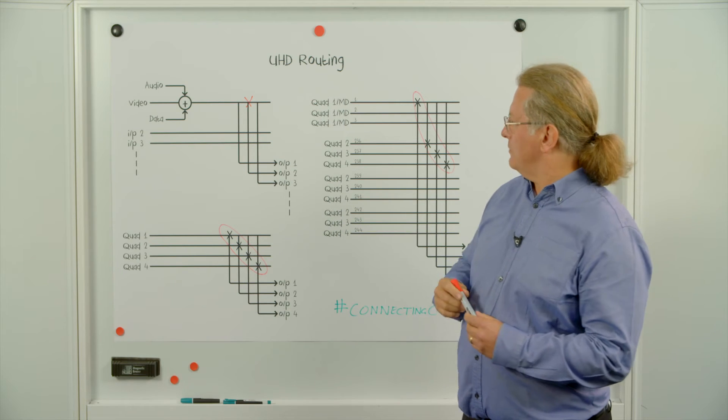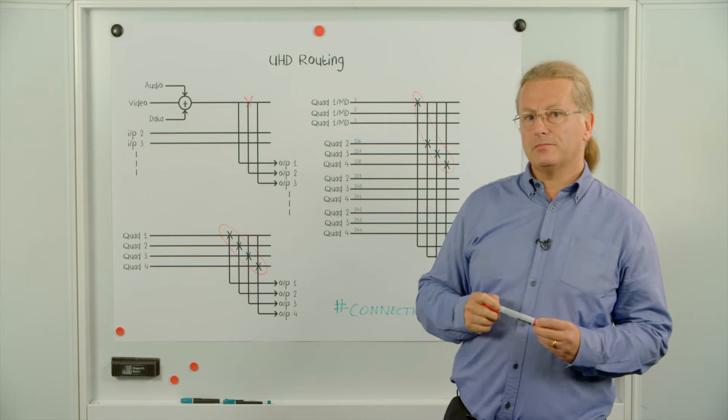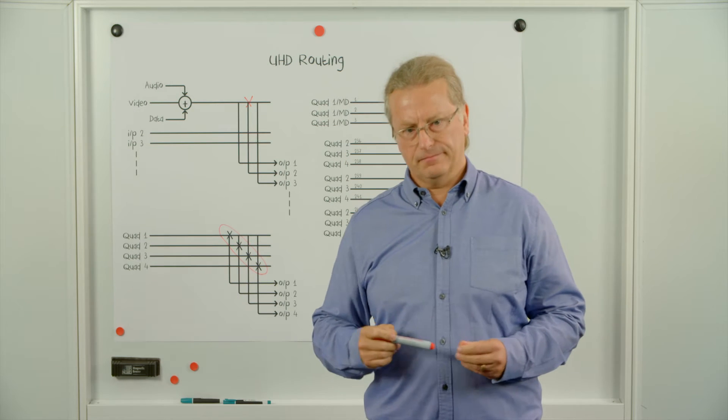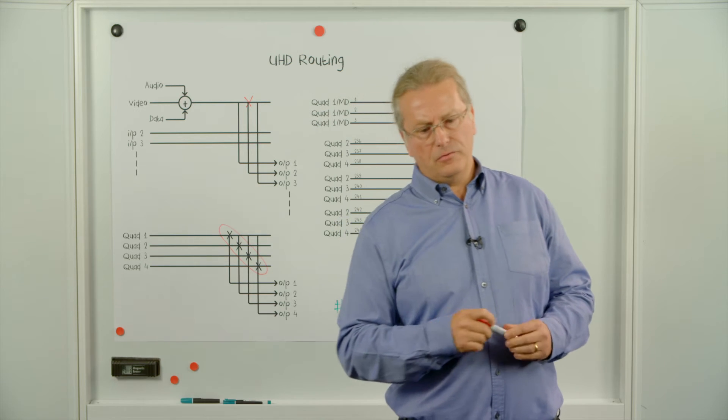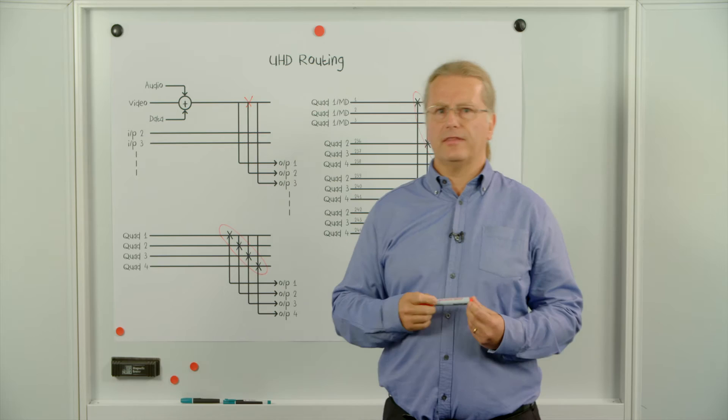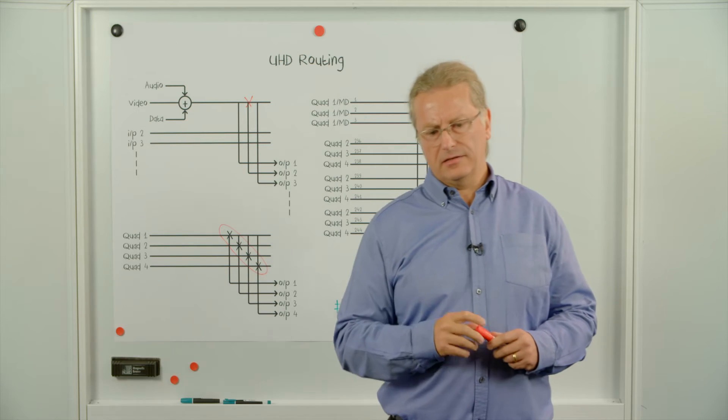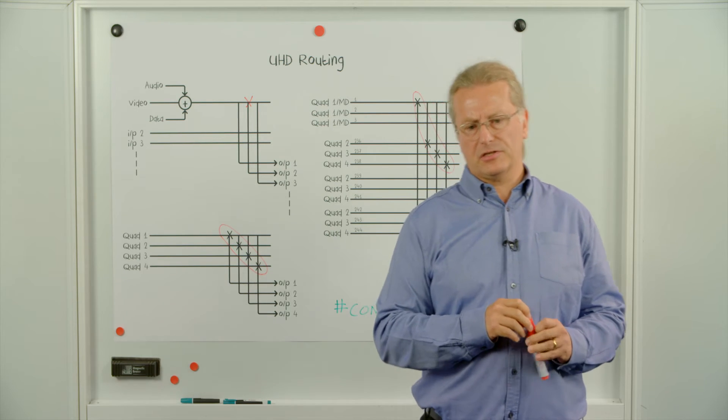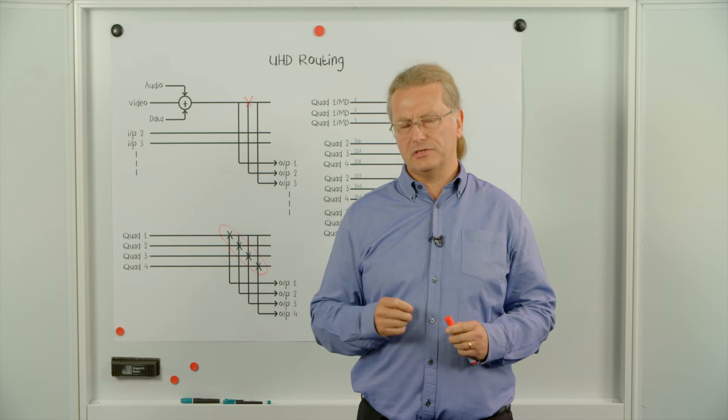If the router doesn't allow the grouping of inputs, perhaps the router control system can come to your aid. If you instruct the router control system of which quadrants need to be switched together, it can group the messages such that it can almost guarantee that the router will switch in time.